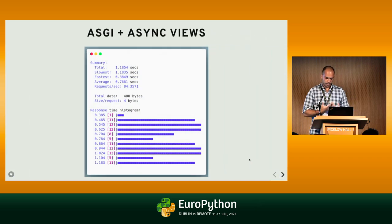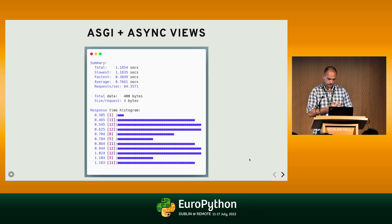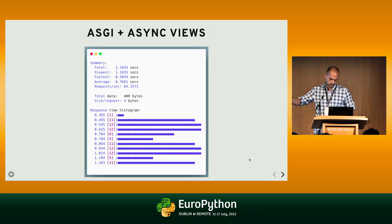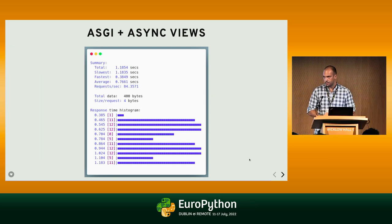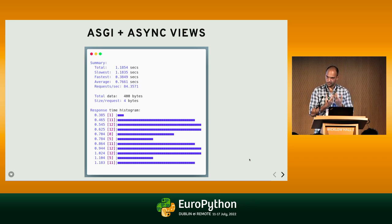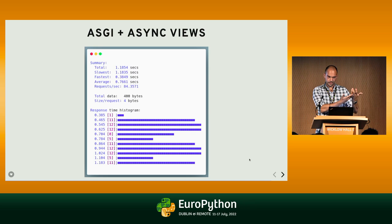If we rework our view as a proper async API, it's about 10 times faster. The only limitation is the number of threads you can spawn to handle ORM queries. You also have a way to fine-tune how many threads are spawned from the beginning in Django, giving you the ability to potentially run multiple transaction-atomic blocks concurrently.